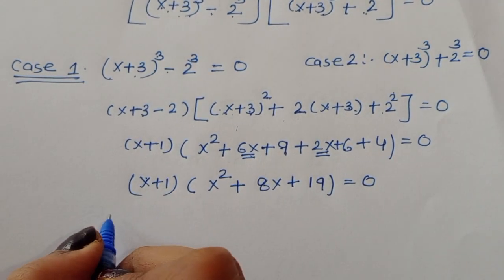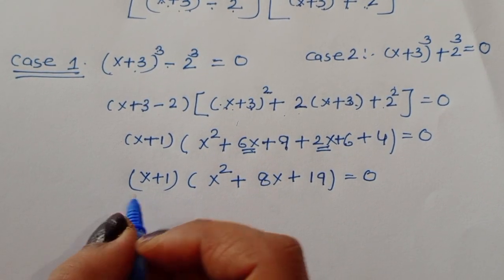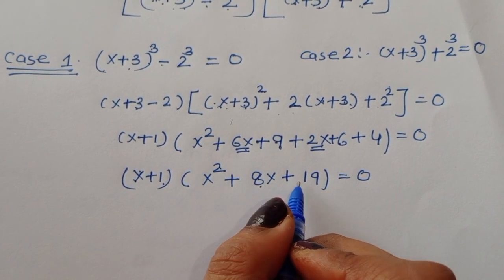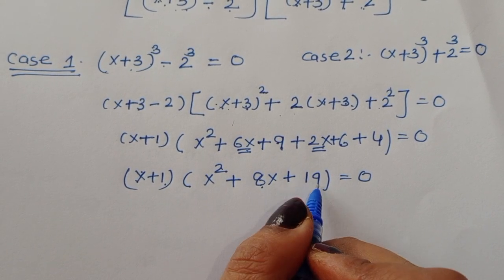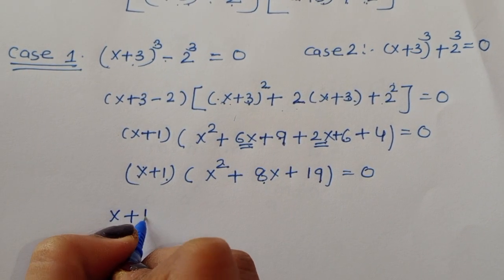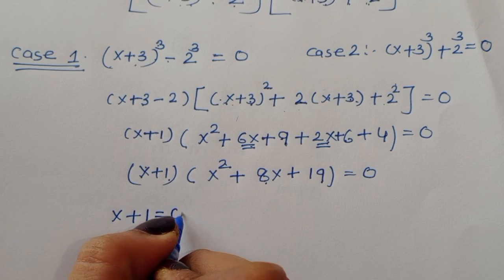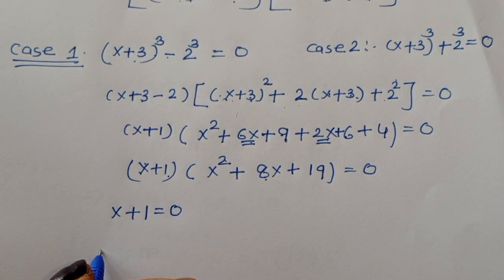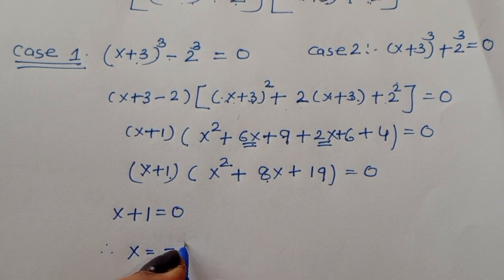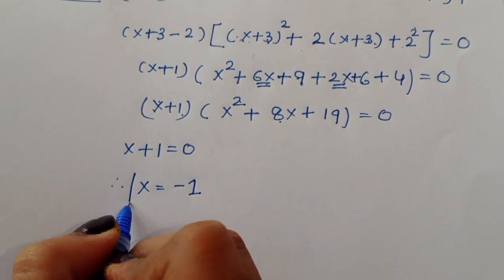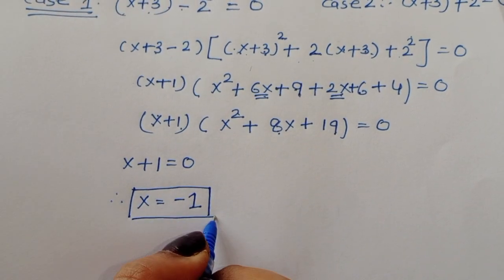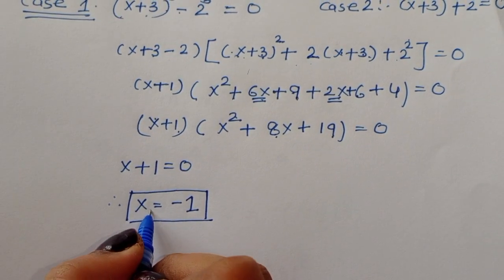From this we get two equations: x+1 = 0 and x^2 + 8x + 19 = 0. From the first equation, x+1 = 0, therefore x = -1. So this is x1 = -1.